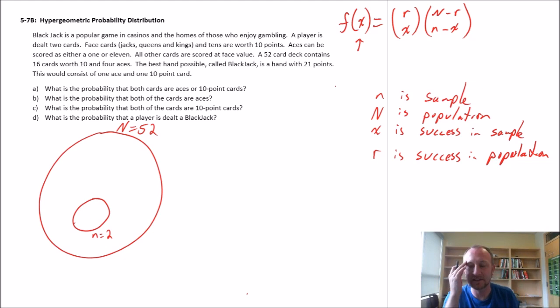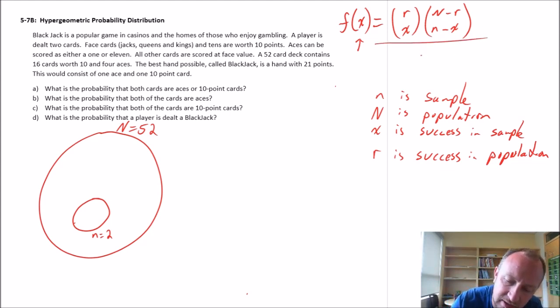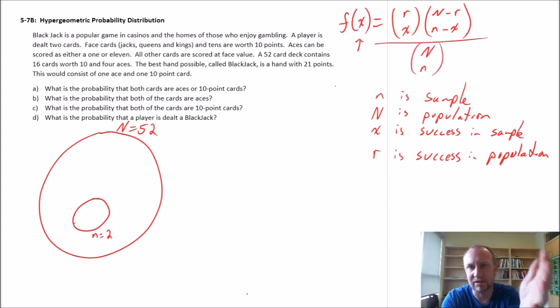The sample size minus the number of successes in the sample would equal the number of failures. So these terms here are both failures in the population and failures in the sample. And then this is divided by N and little n. It looks a little bit simple in that notation, but that's all combinatorial notation using the factorial operator. So it's a little bit tedious to do the calculations, but we'll get through that.